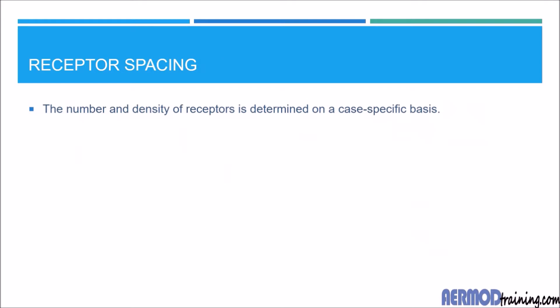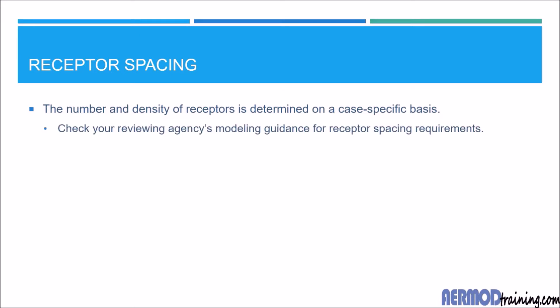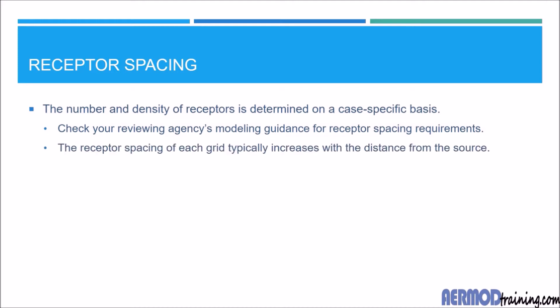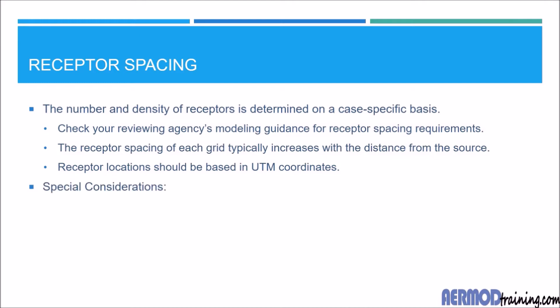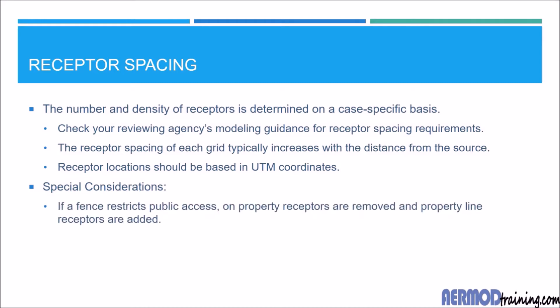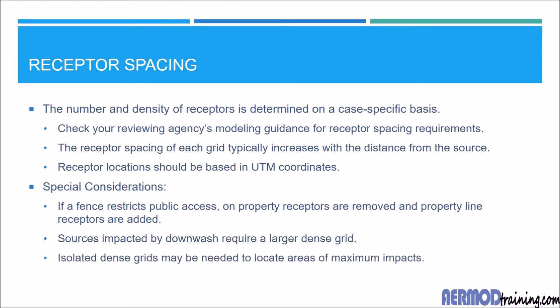The number and density of receptors is determined on a case-specific basis and can vary from state to state. You will need to check with your reviewing agency's modeling guidance for receptor spacing requirements. The receptor spacing of each grid typically increases as you move further from the source, and the receptor locations are listed in UTM coordinates. There are a few special considerations: if a fence or wall restricts public access, on-property receptors are removed and property line receptors are added. Sources impacted by downwash may require large dense grids, and isolated dense grids may be needed to locate areas of maximum impacts.